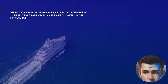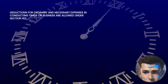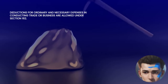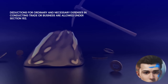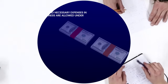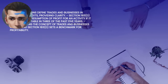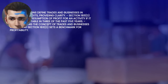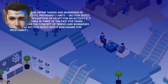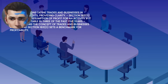Section 162 allows deductions for all the ordinary and necessary expenses paid or incurred during the tax year in carrying on any trade or business. While not explicitly defining business, it implies an activity engaged in with continuity and regularity for profit or income generation. Throughout the code, specific provisions refer to trades or businesses in various contexts, further shaping the understanding. For example, Section 183-D establishes a presumption that an activity with profit in three of five preceding years is a business.